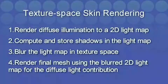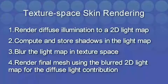There are four main steps to our algorithm. First, we render the diffuse illumination to a 2D lightmap. Second, we compute and store shadows in the lightmap. Third, we blur the lightmap in texture space. And finally, when rendering our final mesh, we use this blurred 2D lightmap to provide our diffuse illumination.